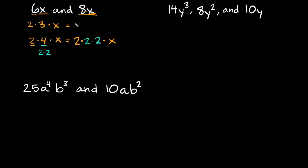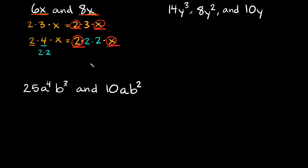So 6x breaks down into 2 times 3 times x, and 8x breaks down into 2 times 2 times 2 times x. To find the greatest common factor, circle the factors they have in common. We have a 2 in both, and an x in both. There's a 3 in 6x but no 3 in 8x. So they share a 2 and an x — the greatest common factor is 2x.